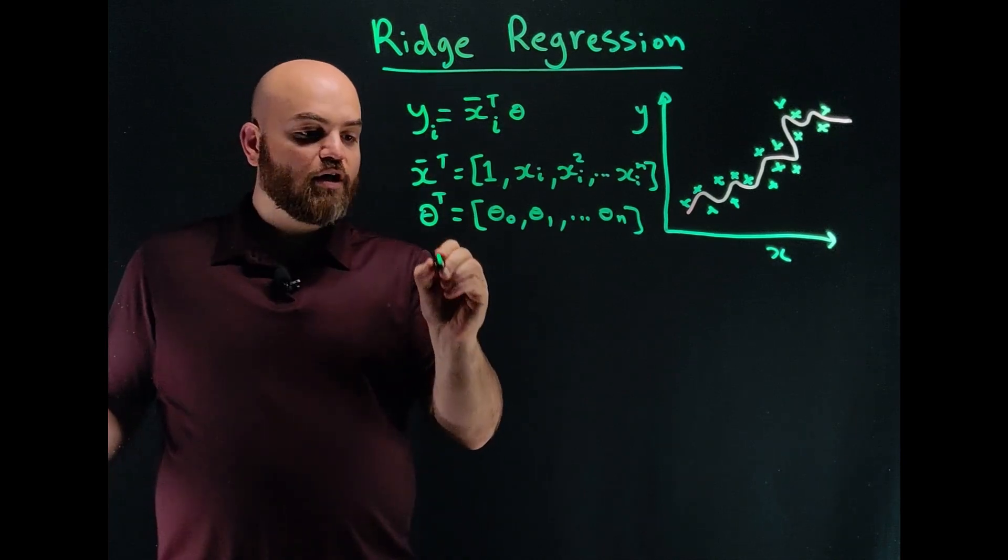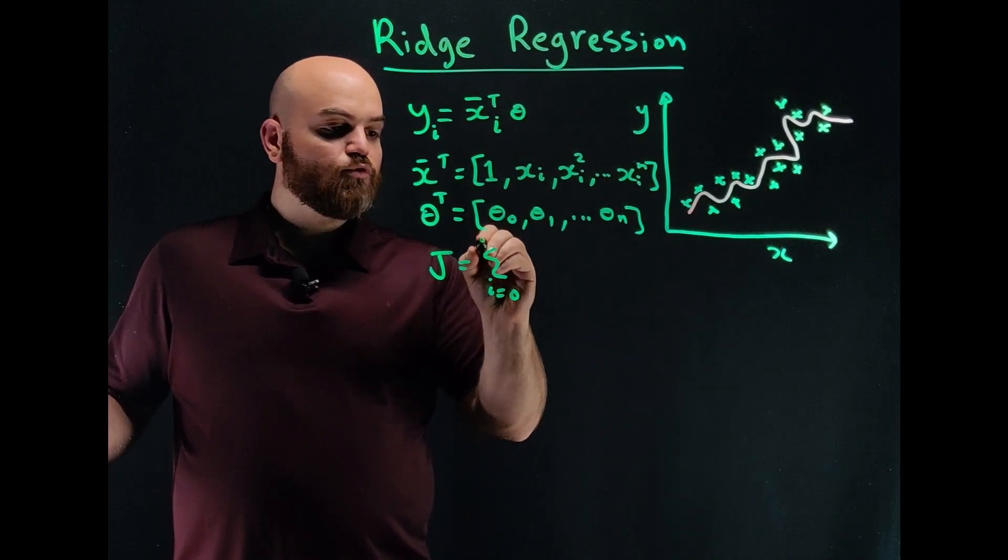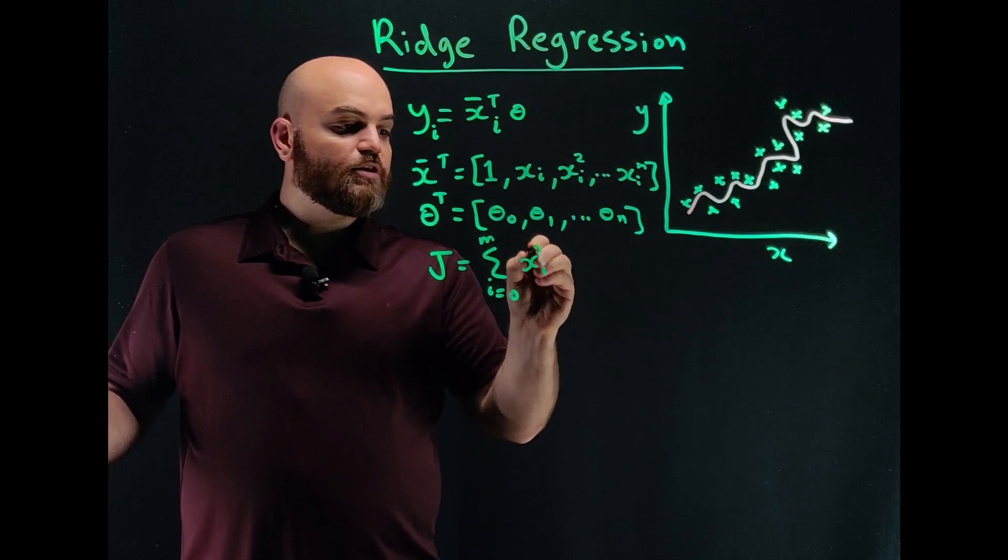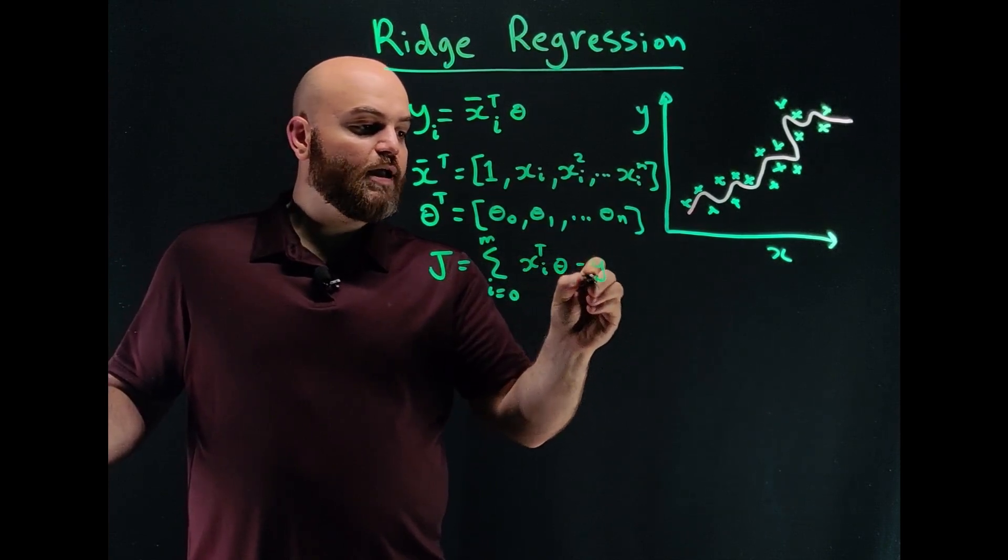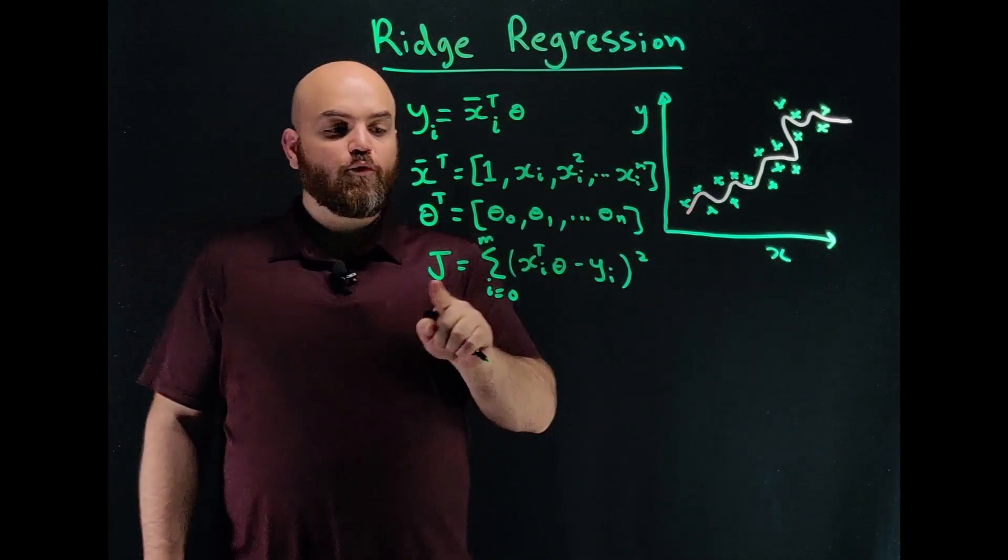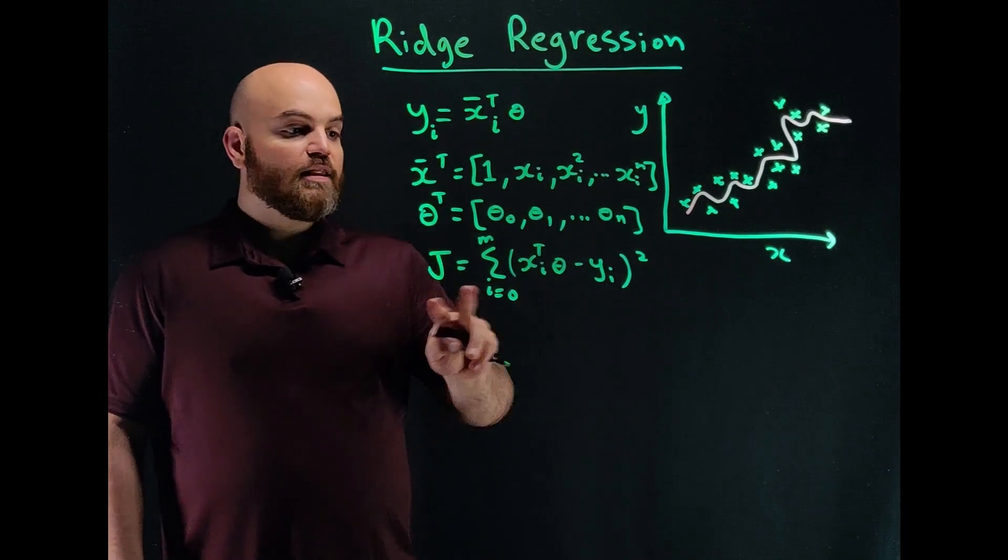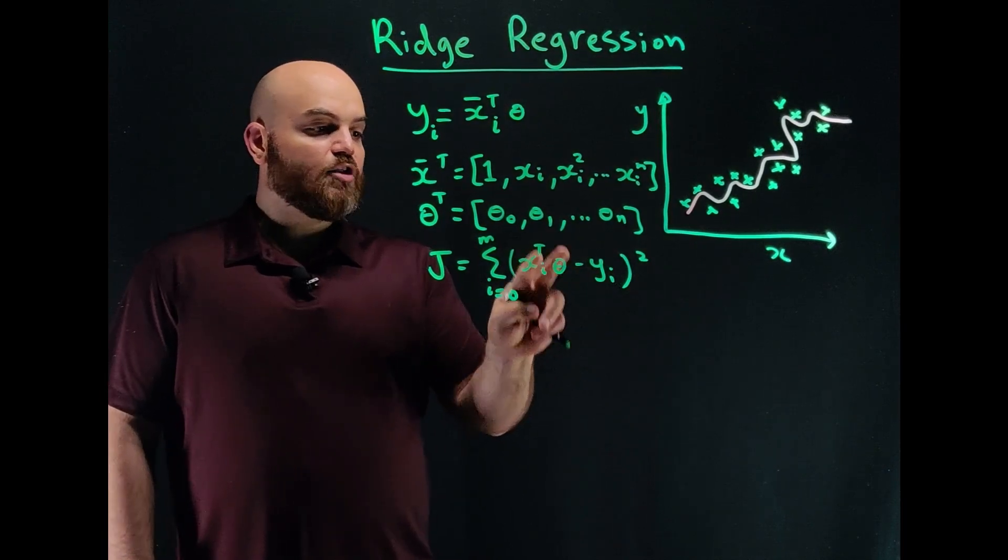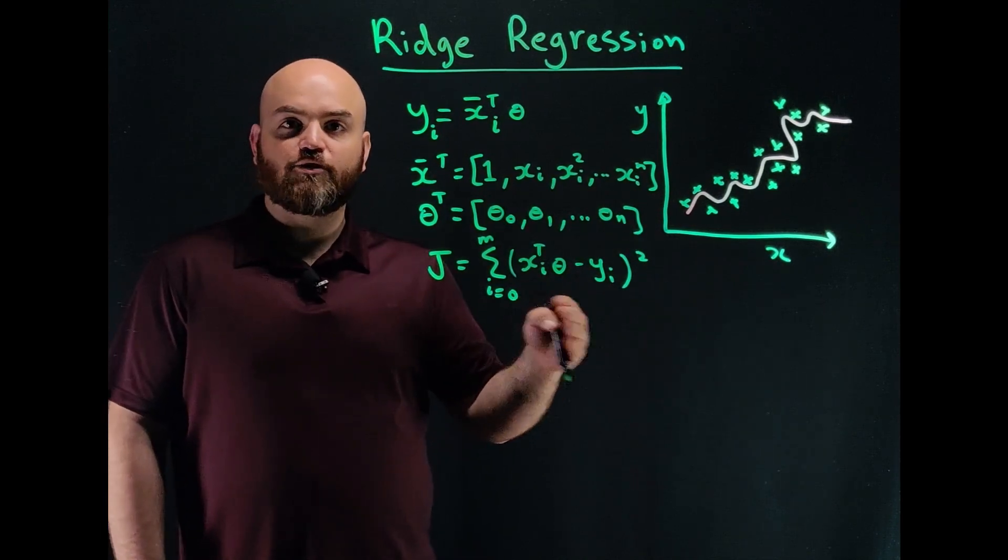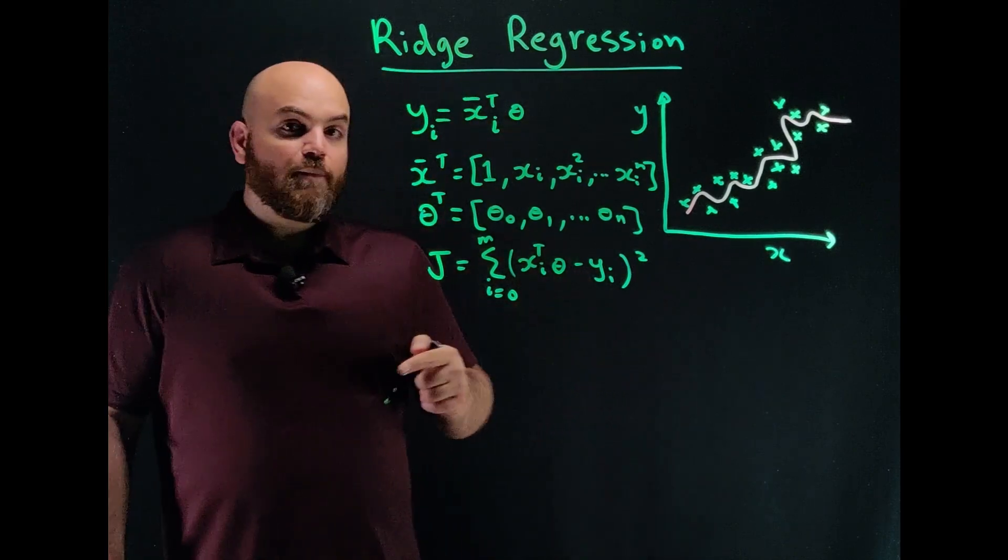So, one solution from my prior video, to do this fit, was to say that I have a cost function J, that's equal to summation of i, 0 to m, and I do xi transpose theta minus yi squared. And in the previous video, we did gradient descent, and we solved this problem, and we were able to find the theta that fixes it. So this is essentially saying my model minus all my measurements squared, so this is essentially a linear least squares, or an ordinary least squares. If I do that, I'll fit something, but it might overfit.